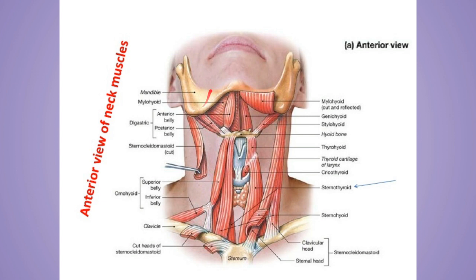First of all, this is the jaw bone or the mandibular bone, this is the hyoid bone, this is the thyroid cartilage of the larynx, and this is the cricoid cartilage.